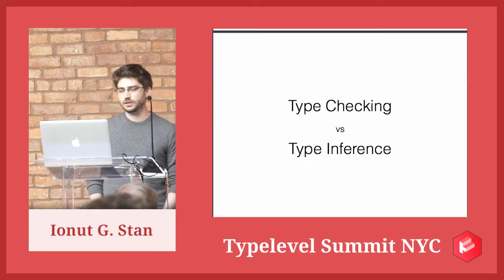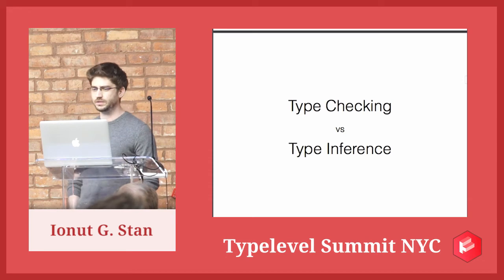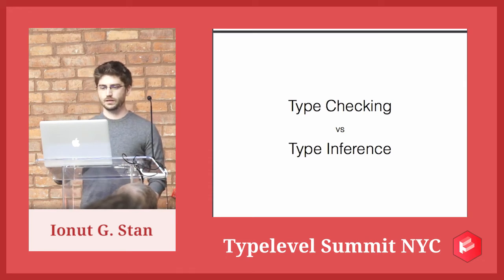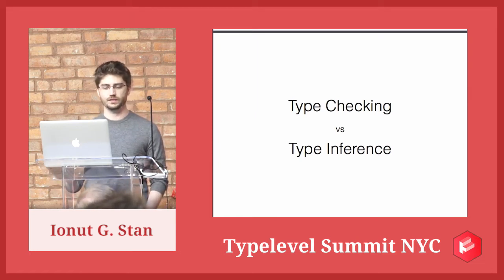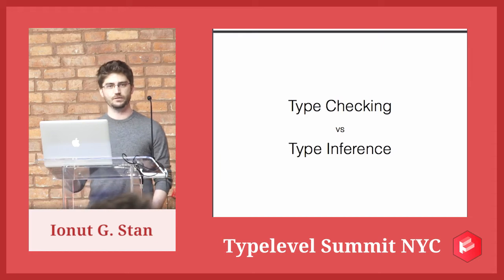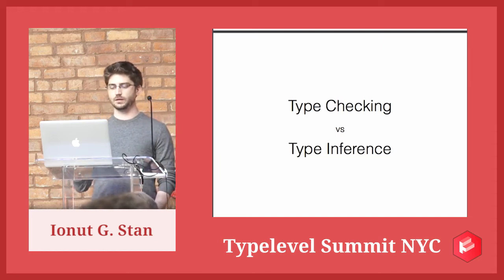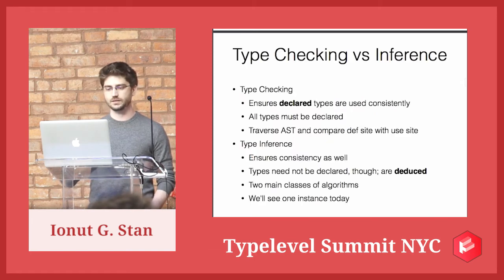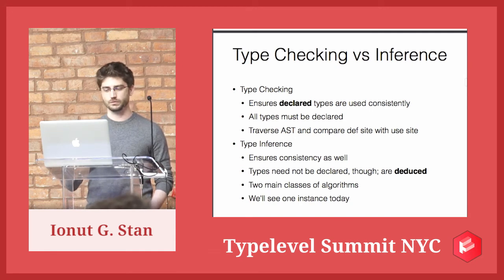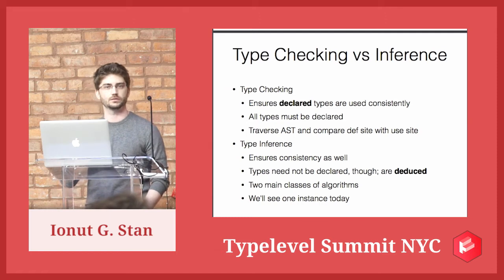A little note about type checking and type inference. With type checking, all the types are declared and the type checker validates the consistency of definition and use. Whereas with type inference, you can leave out some types and the type inference will deduce some of them for you. In the case of ML, it can go to extreme cases — leave out all the types — and the compiler will infer everything for you in most cases. That's called global type inference, as opposed to what Scala has, which is local type inference.